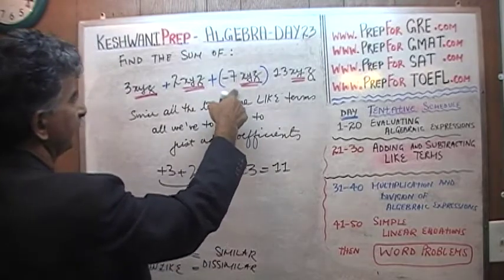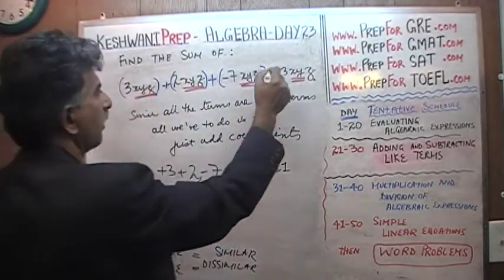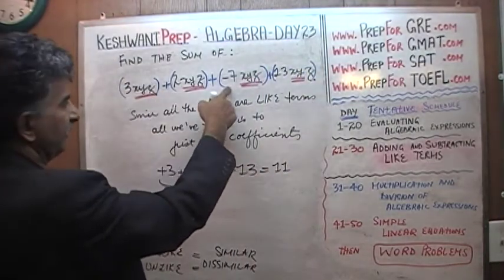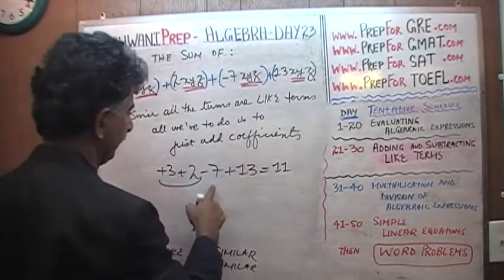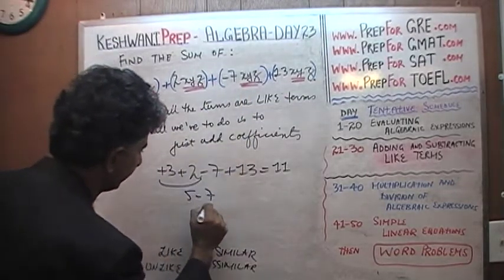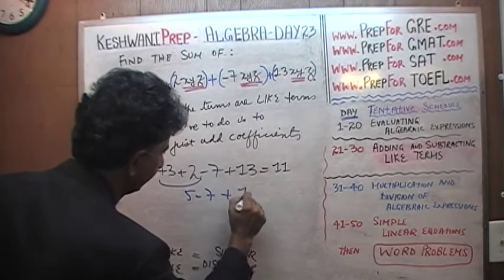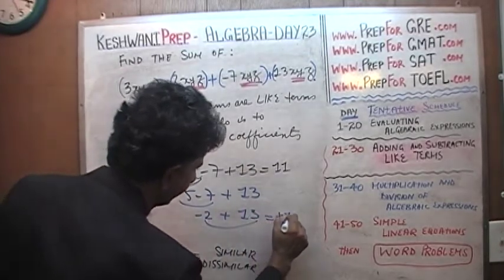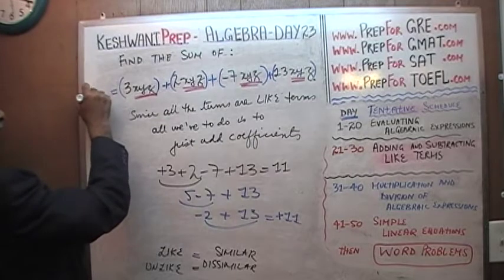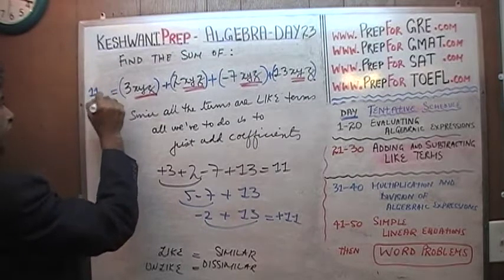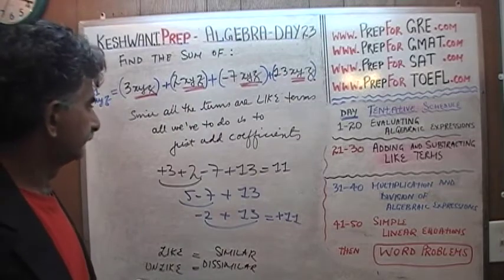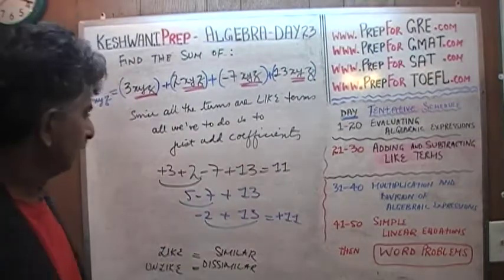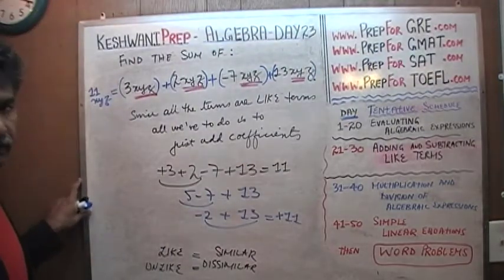So if we add up all these terms: 3 plus 2 is 5, then 5 minus 7 — this needs a parenthesis — 5 minus 7 is negative 2, then negative 2 plus 13 gives us positive 11. So the answer is 11xyz — that is, 11 times x times y times z.